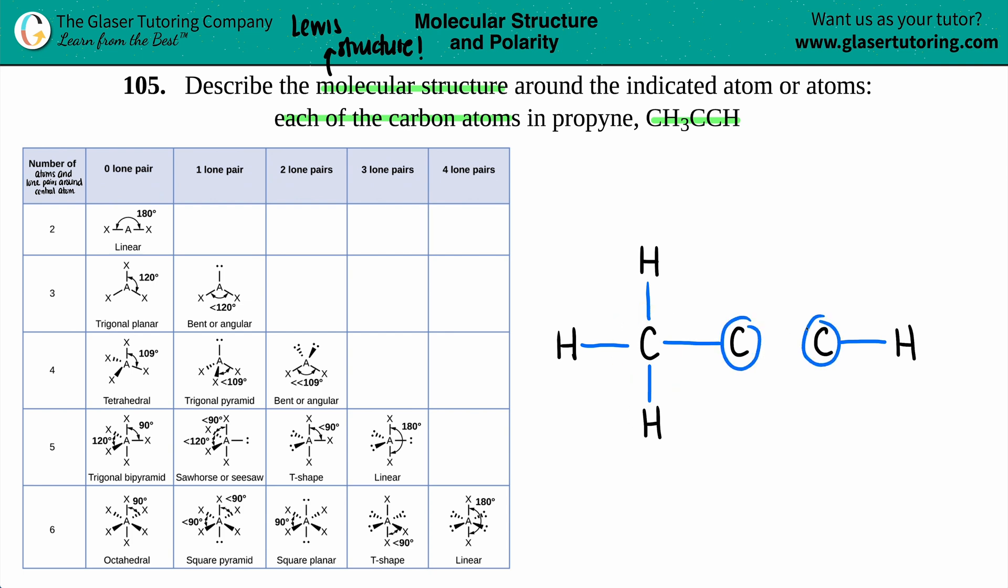Now I just need to bridge the gap between these two carbons. So I'll make a single bond, but this carbon has only two bonds. So it's got to do it again. Let's see. Now it's got three bonds. It wants one more. So we have a triple bond. We finally have our Lewis structure for propyne.